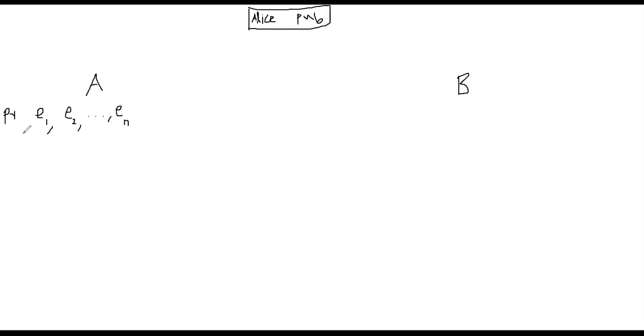So Alice generates first the super increasing sequence, which is private. So I wanted to put private here just to be clear. Nothing is public yet. This is private. Alice generates this private sequence and she keeps it private. Nobody knows it. However, we do know that this is a super increasing sequence.